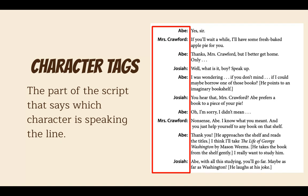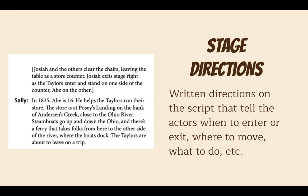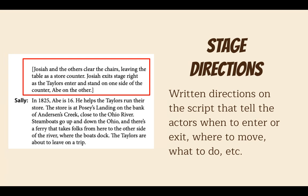Then you have the stage directions. These are written directions on the script that tell the actors when to enter or exit, where to move, what to do, etc. A good playwright will include that action in there already so that the play comes to life accurately. In a script, stage directions are sometimes in italics or off to the side, but they're usually separate with no character tag next to them — meaning this is not a part anyone is saying, just instructions. For example, it might say: 'Josiah and the others clear the chairs leaving the table as store counter. Josiah exits stage right as the tailors enter and stand on one side of the counter, Abe on the other.' It tells the actors where to stand, what to do, and where to enter or exit.